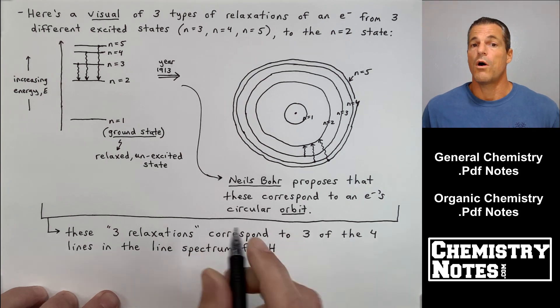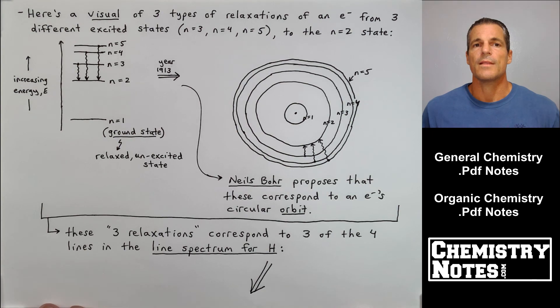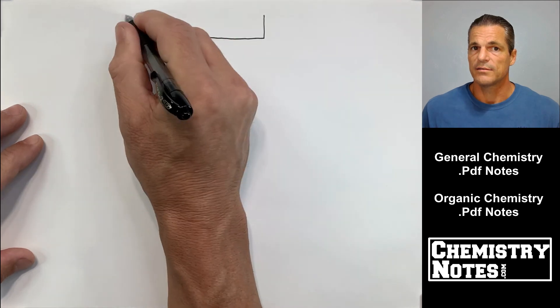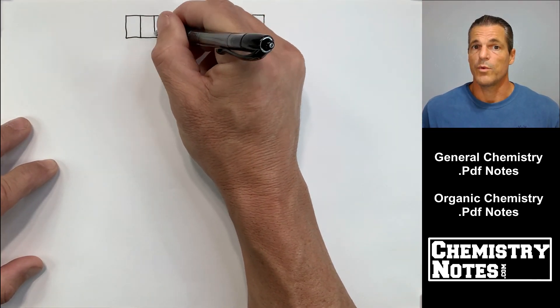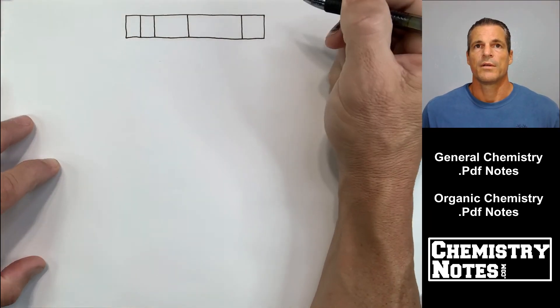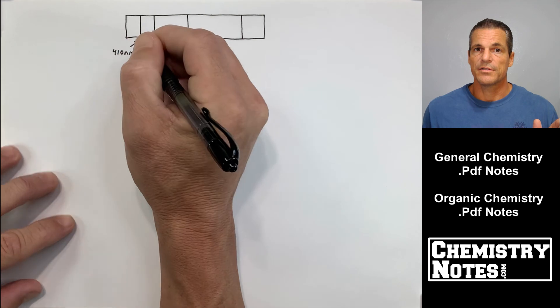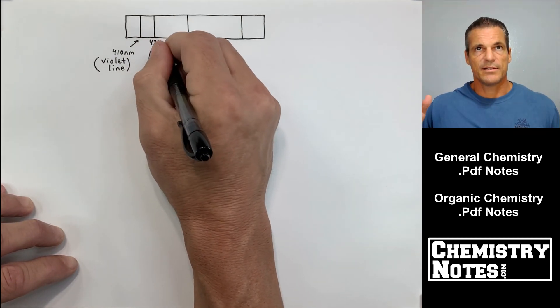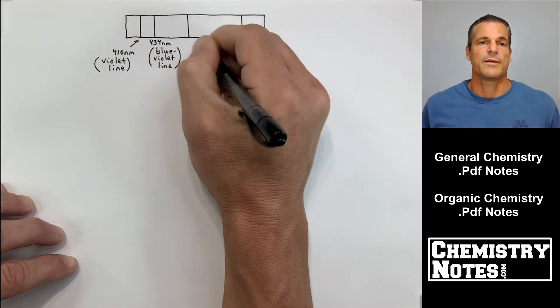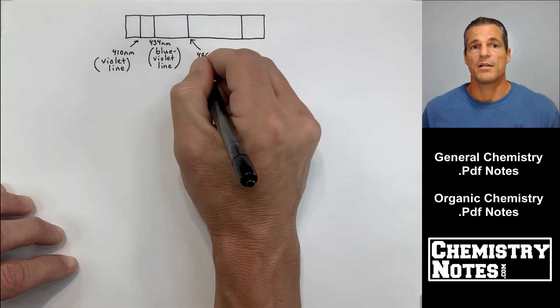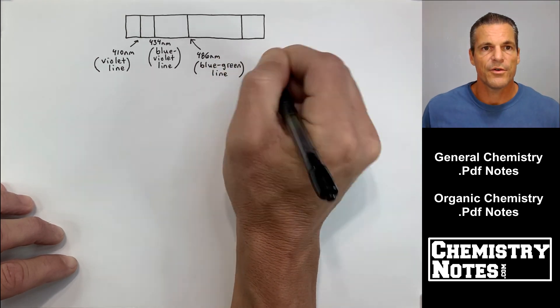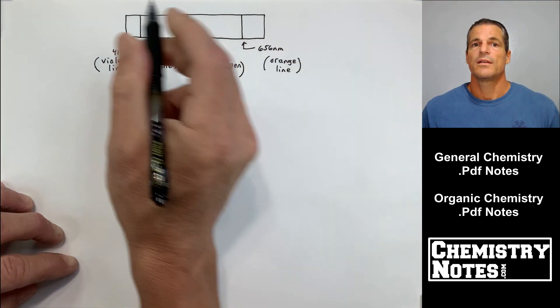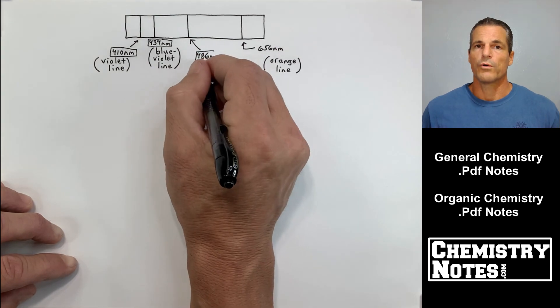Here is the line emission spectrum for hydrogen. I'm going to draw four vertical lines and they all occur at specific wavelengths, and those wavelengths correspond to a certain color. Visible light goes from 400 nanometers to 750 nanometers. So 410 nanometers corresponds to a violet line, 434 nanometers is blue-violet, 486 is blue-green, and at 656 you have an orange line.